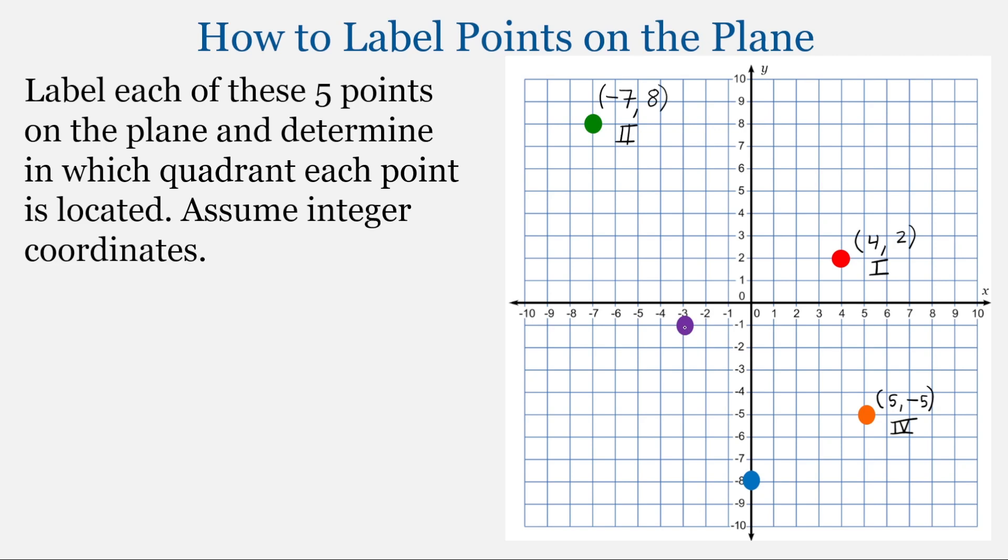So looking at the purple point, if we extend the line to that x-axis, it'll cross at negative 3. So our x-coordinate is negative 3. And then extending that line to the y-axis, it's going to cross at negative 1. So the y-coordinate is negative 1. And this is in quadrant 3.